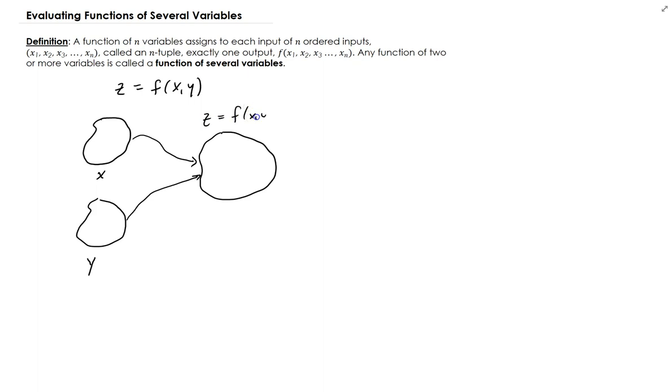So the output that you get from here, the output from this set will be z. So it's very similar to a function of one variable, but in this case, we're working with several variables.